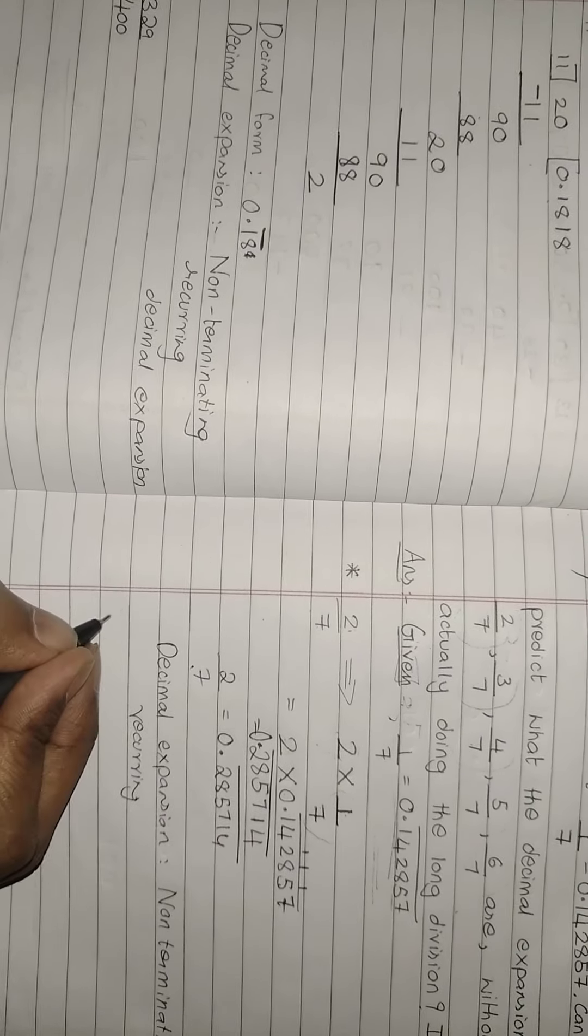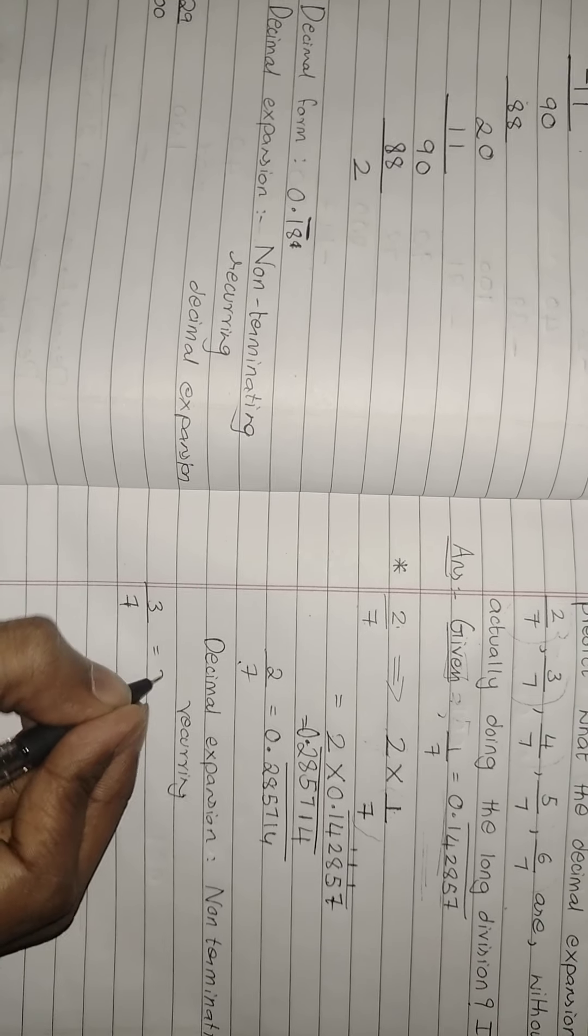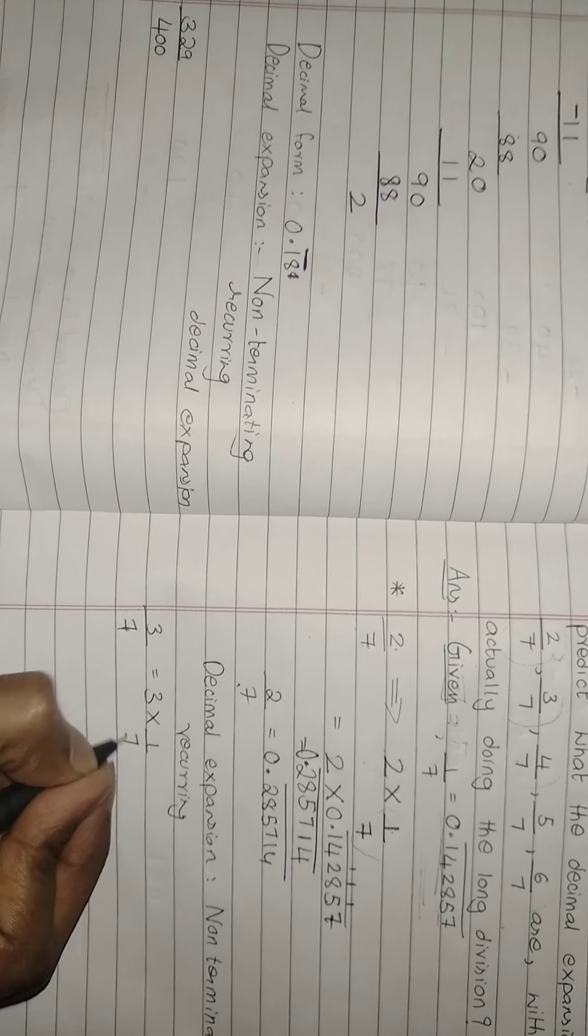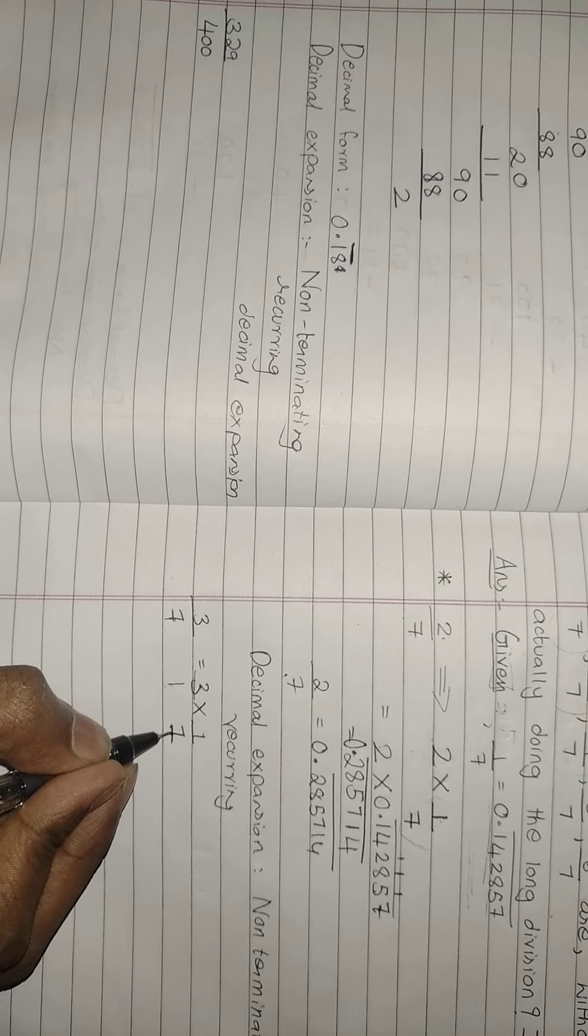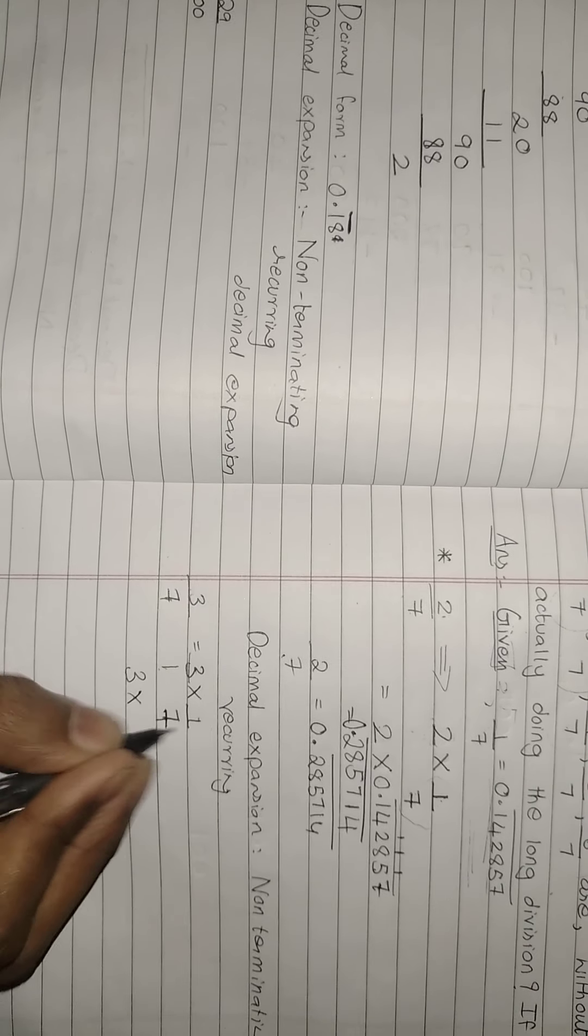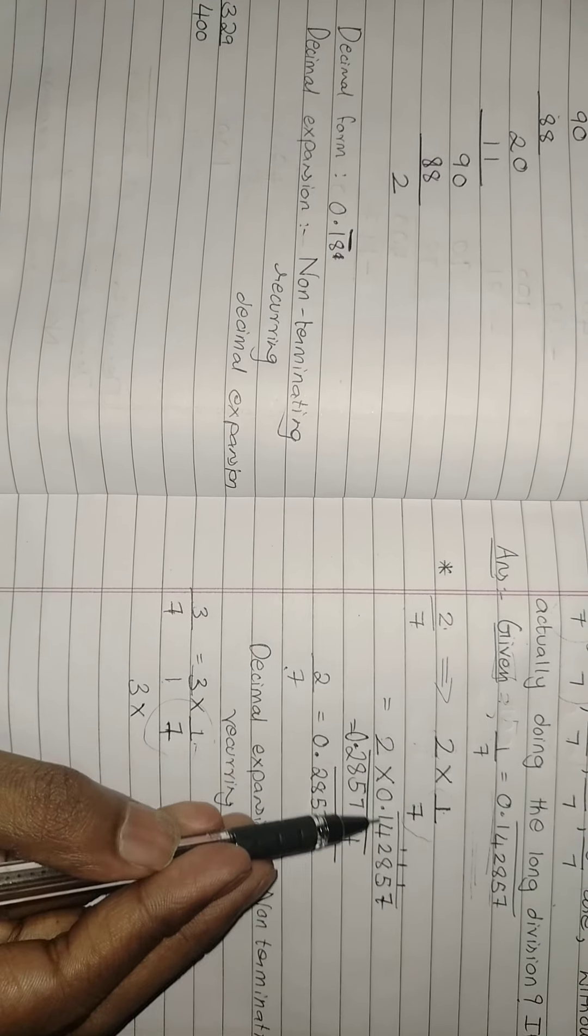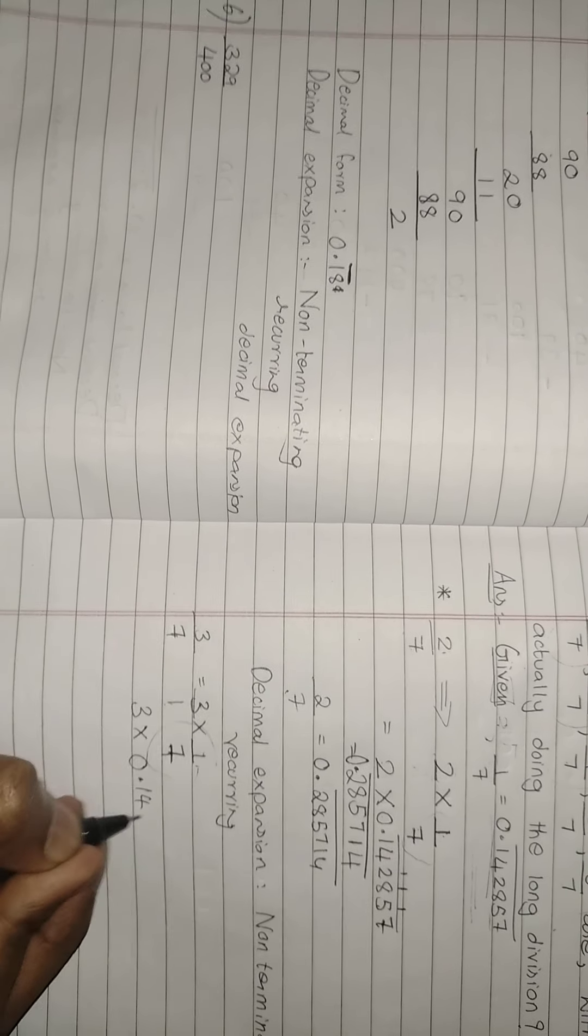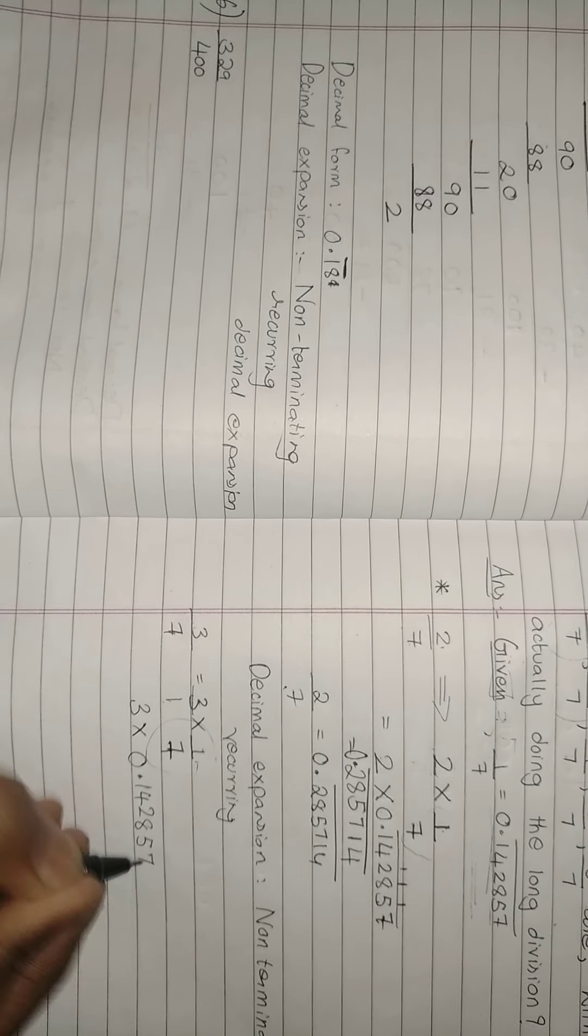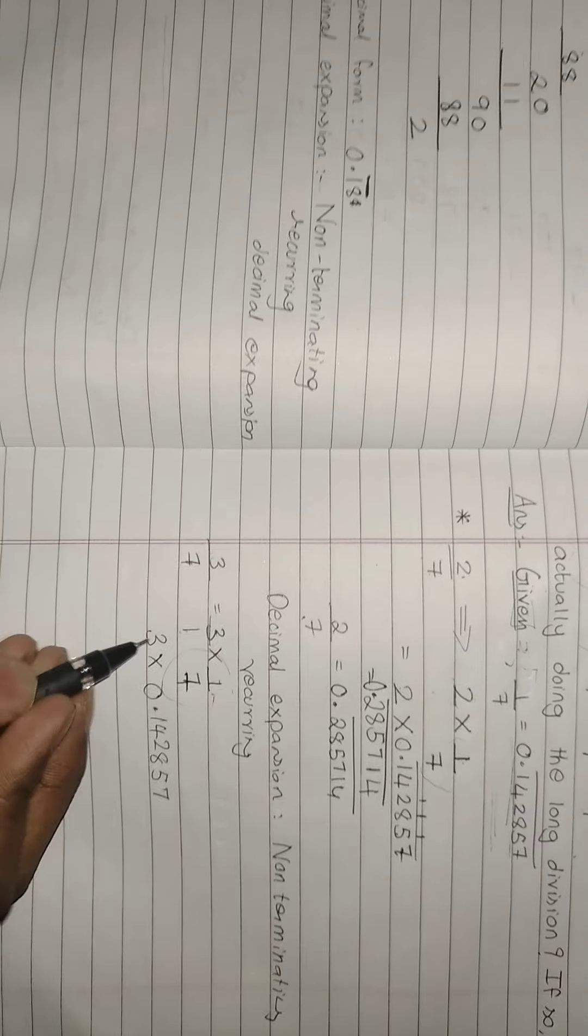Similarly, find it for 3 by 7. How do you find it for 3 by 7? Same step. 3 into 1 by 7 only. 3 into 1 by 7 means what? 3 into 1 is 3, 1 into 7 is 7. So 3 into, in place of 1 by 7, I am going to write 0.142857. Now we are just going to multiply.